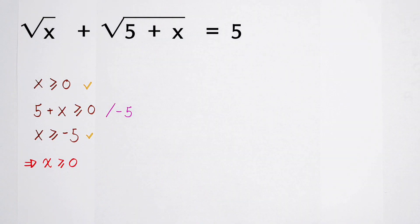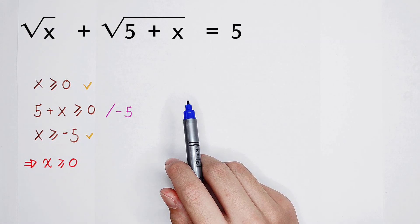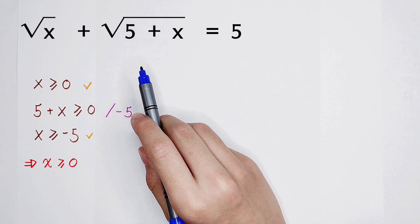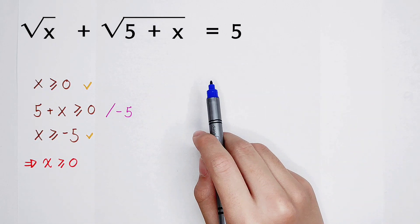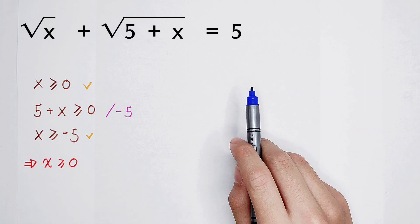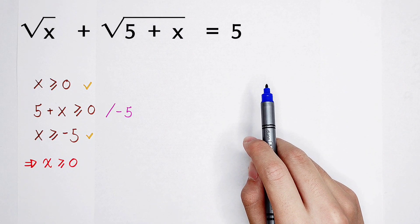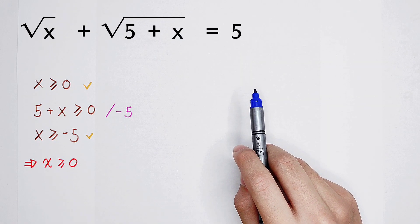If you try squaring both sides directly, you'll find that the left side becomes x plus (5 plus x) plus square root of x times (5 plus x) — the square root still appears. So that approach is not ideal for us.